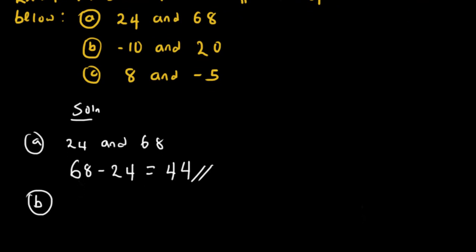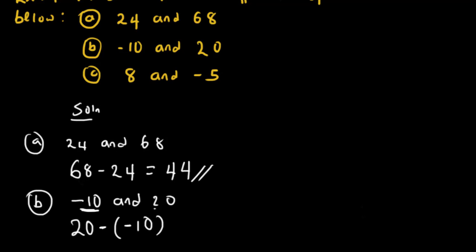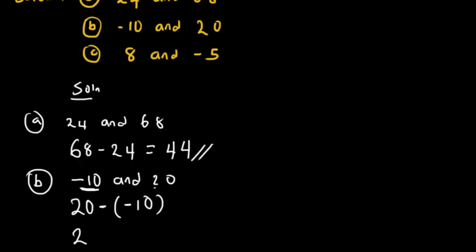For example (b), we find the positive difference between minus ten and twenty. The bigger number comes first, so we have twenty minus negative ten, which we write as twenty minus (minus ten). Minus times minus is plus, so this becomes twenty plus ten, which equals thirty.